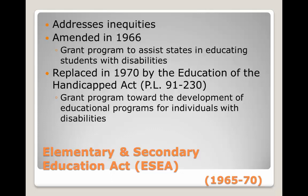ESEA was amended in 1966 to establish a grant program to assist states in the initiation, expansion, and improvement of the education of students with disabilities. In 1970, that program was replaced by the Education of All Handicapped Children Act, Public Law 91-230, which also established a grant program geared toward the development of educational programs for students and individuals with disabilities.